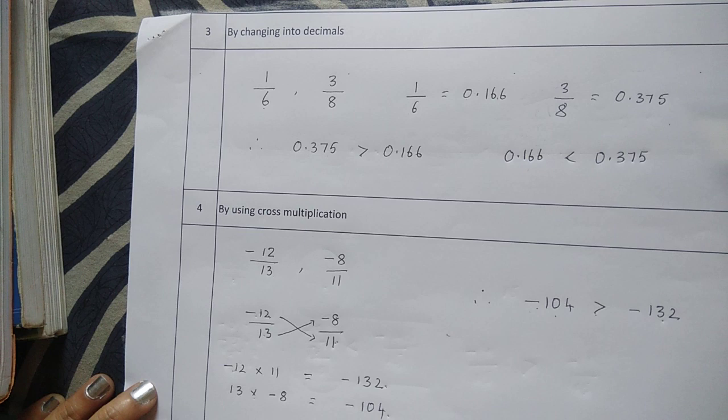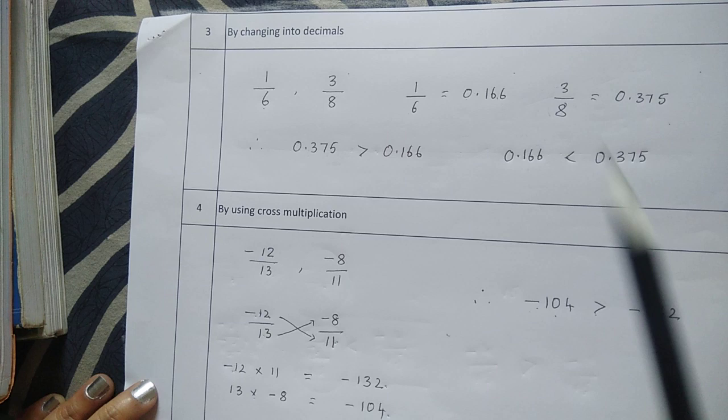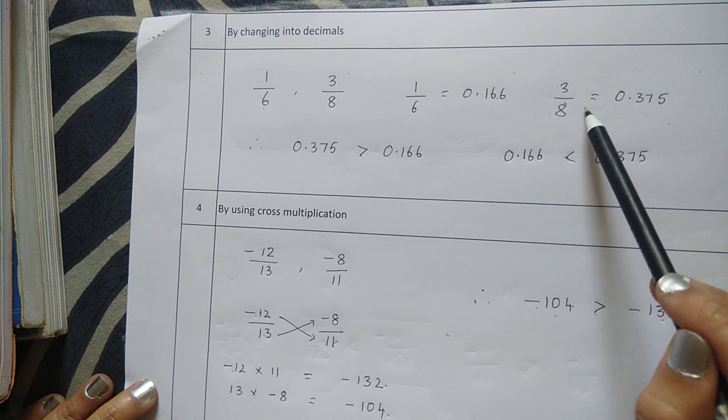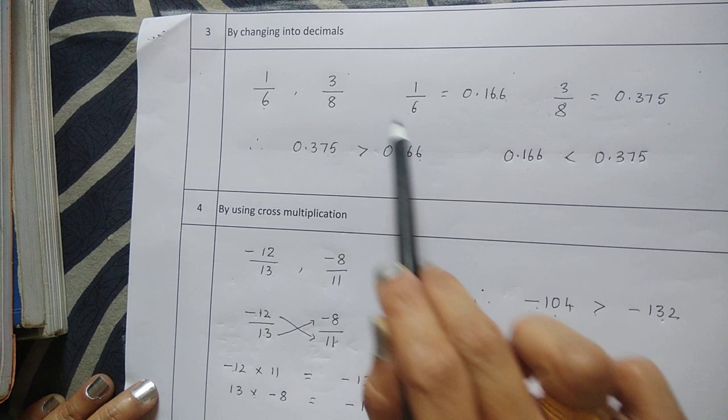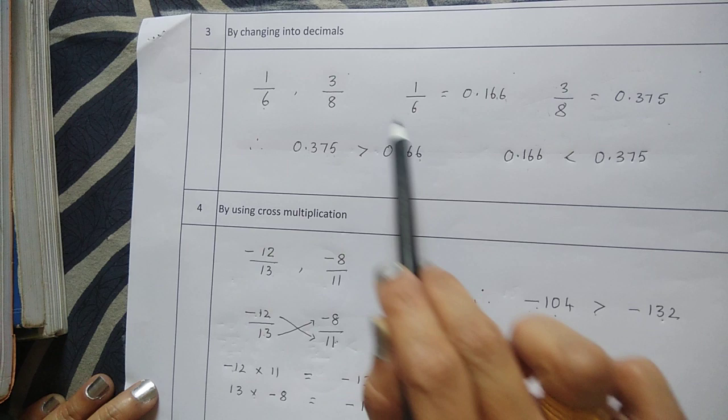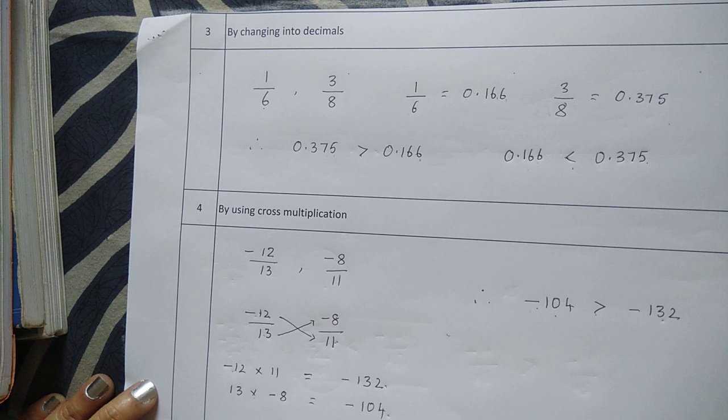The third method is by changing into decimals. For example, to compare 1/6 and 3/8: convert both to decimals. 1/6 equals 0.166 and 3/8 equals 0.375. So 0.375 is greater than 0.166, meaning 3/8 is greater than 1/6.